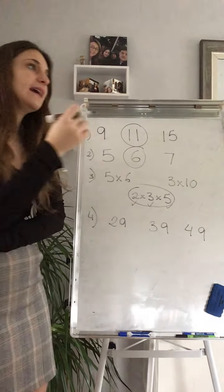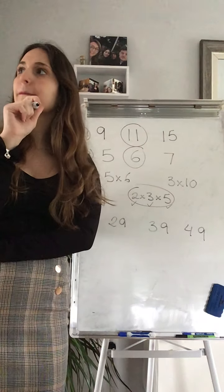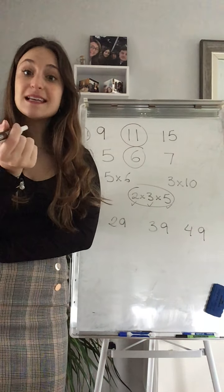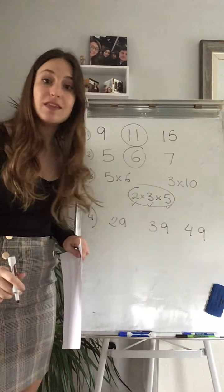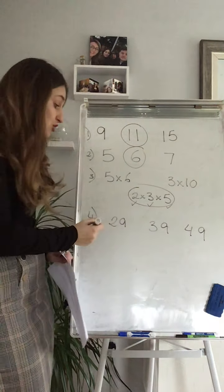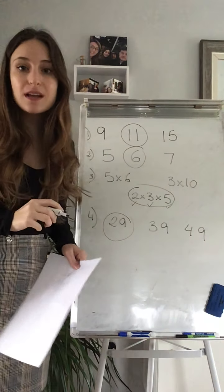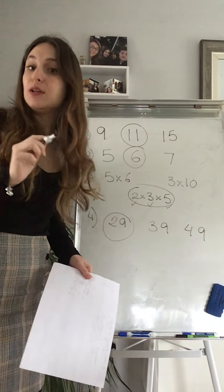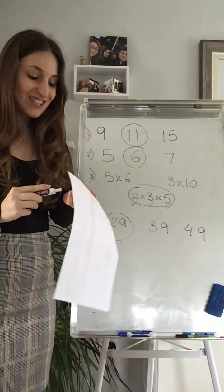What about 49? Is 49 in any of the timetables that I know so far? Yeah. 6 times 7 is 49. So I cannot have that as a prime number either. So my only answer is 29. Because 29 can only be divided by 29 and you get 1, and by 1 and you get 29. That's it.